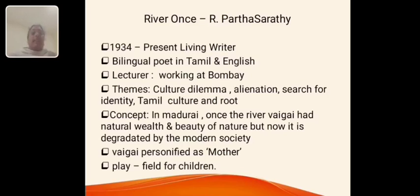The next poem, River Wends, is by R. Parthasarathy. He was born in the year 1934 and is a present living writer. He is a bilingual poet in Tamil and English, currently working as a lecturer in Bombay. He discussed the concepts of cultural dilemma, alienation, search for identity, and Tamil culture and its roots. In River Wends, he discussed the situation of the Madurai Vaigai River — once upon a time how it looked very wealthy and prosperous, but how it has now changed and been degraded by modern society.